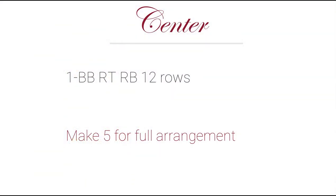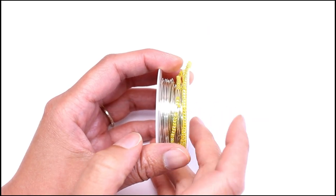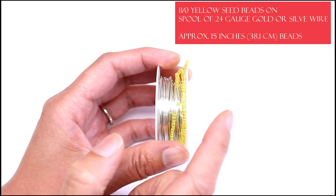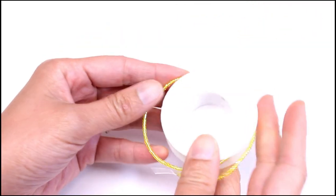Today, we'll be working on the center. I'm going to show you how to make the center and the technique we'll be using is the beehive. I already have some yellow beads already strung onto 24 gauge silver wire. You can also use gold.